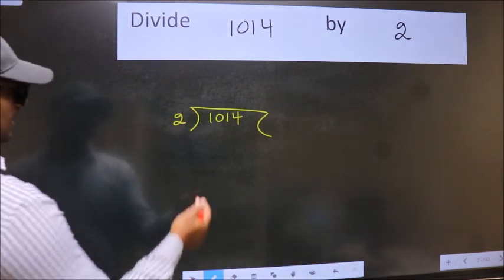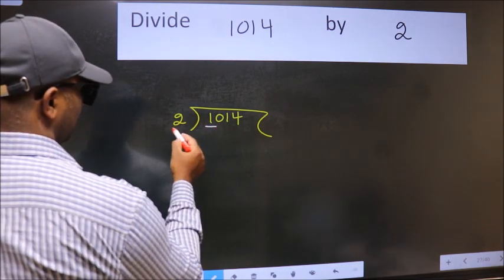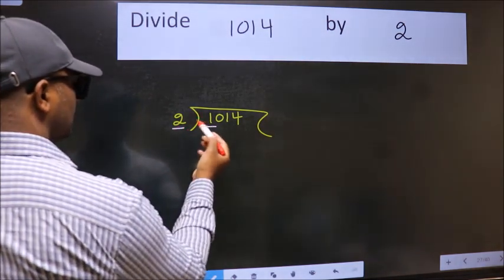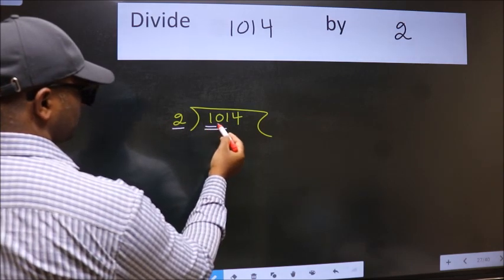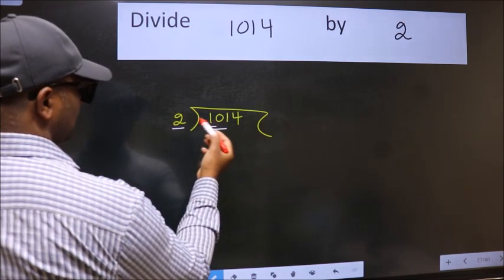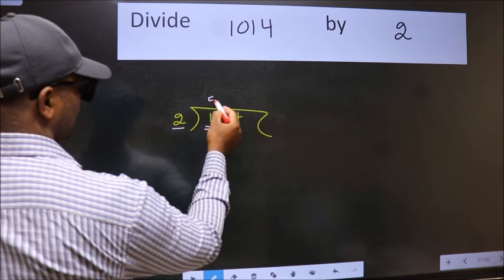Next. Here we have 1 and here 2. 1 is smaller than 2. So we should take 2 numbers: 10. When do we get 10 in 2 table? 2 fives 10.